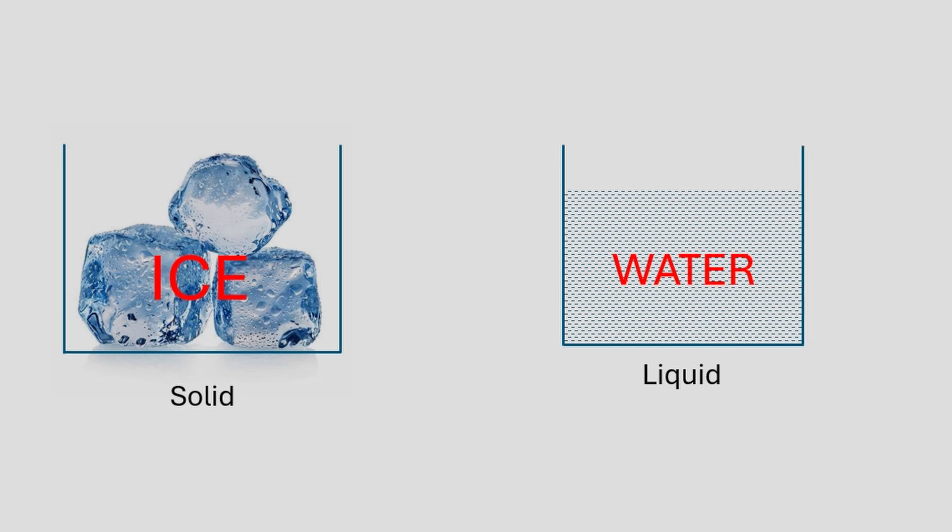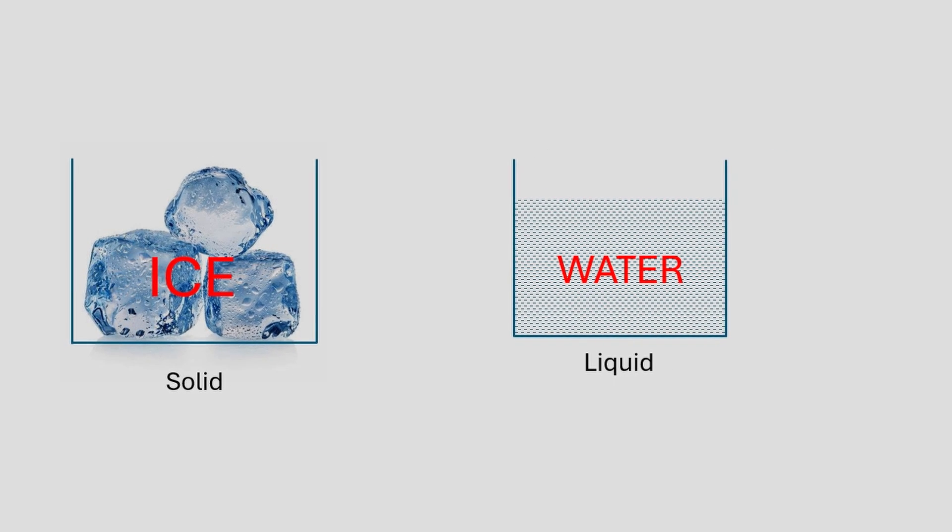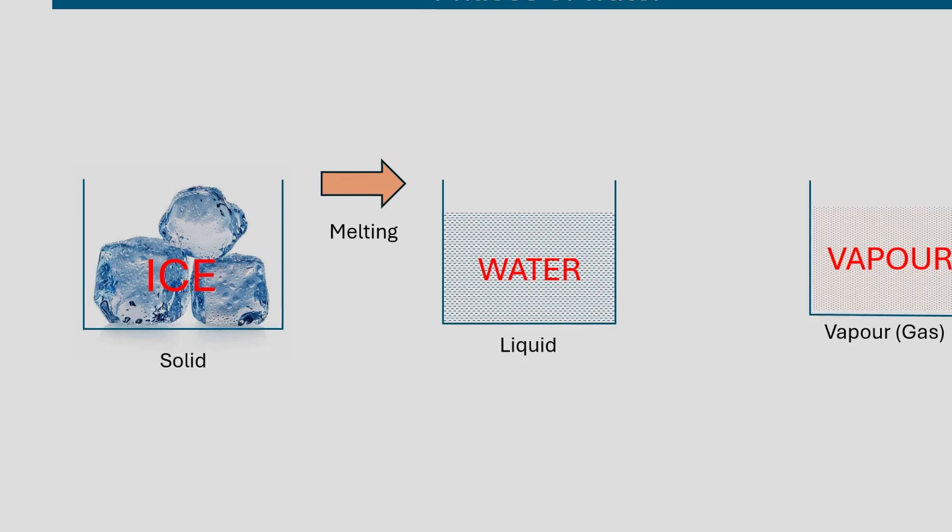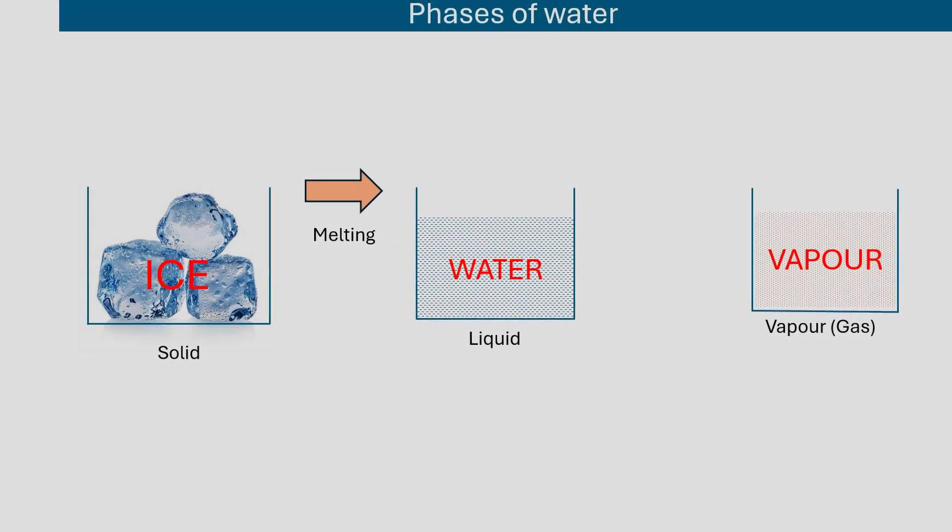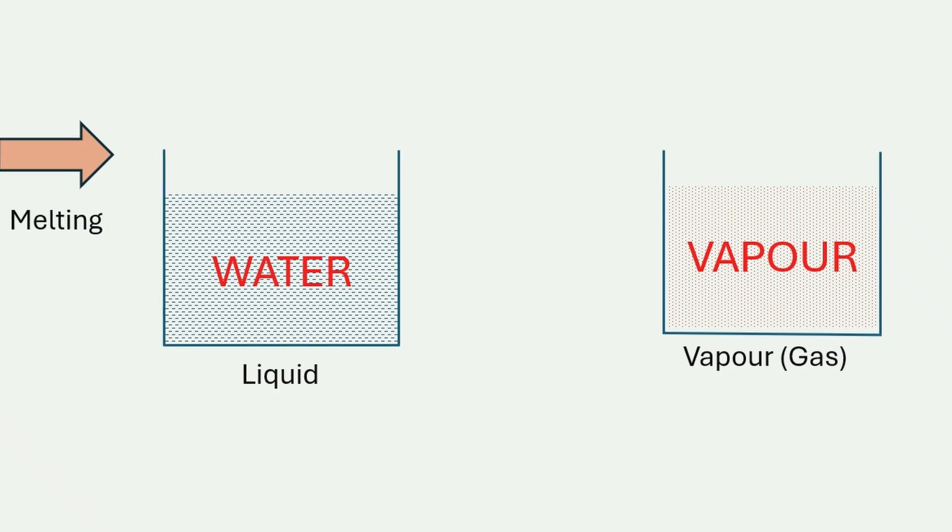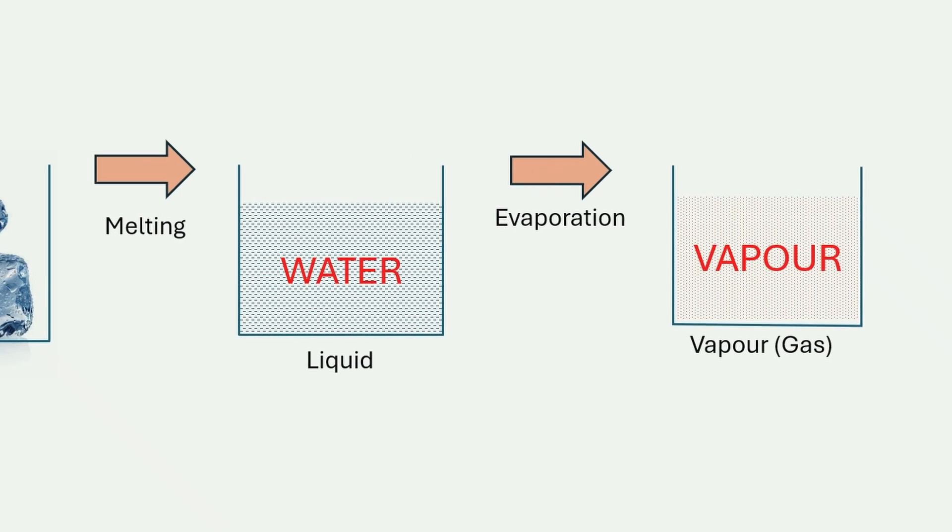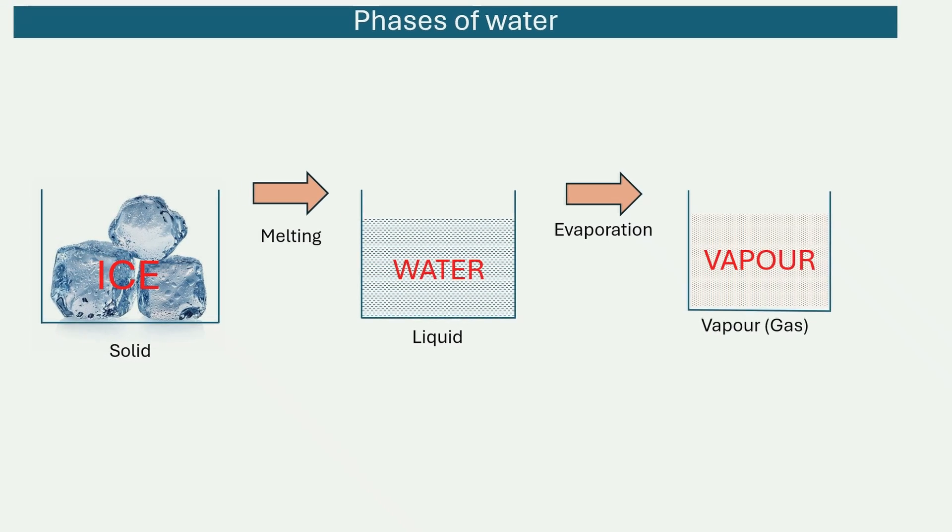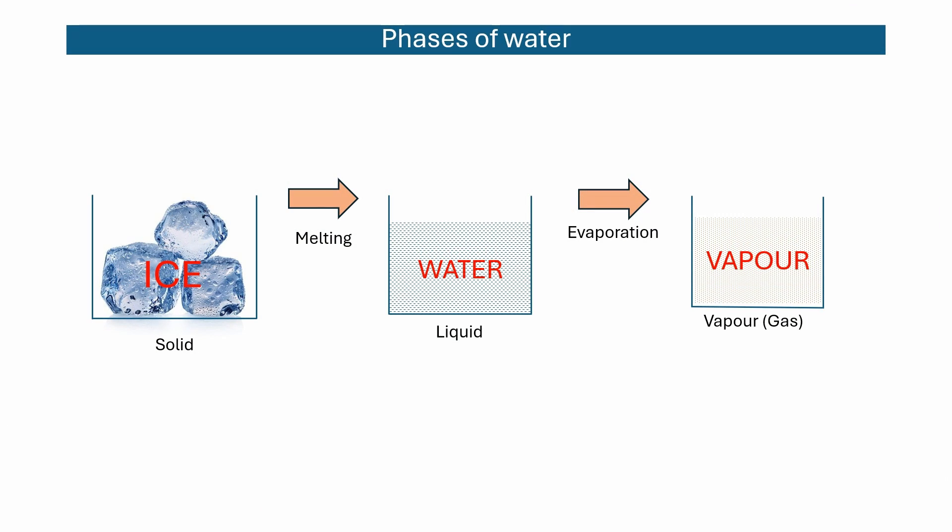The process of change of phase from solid to liquid is called melting. The solid phase of water is called ice, and the liquid phase is called water. The change of phase from liquid to gaseous is called evaporation. The gaseous phase of water is called water vapor. The change of phase from vapor to liquid is called condensation, and from liquid to solid is called freezing.